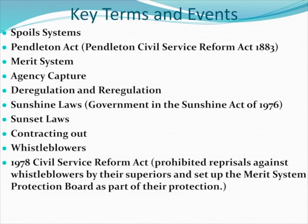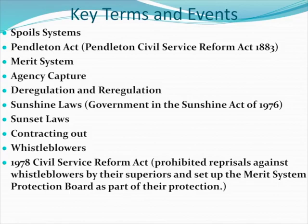Sunshine laws, passed after the Government in the Sunshine Act of 1976, require that federal agencies of a certain size maintain a public record of all meetings they hold. Sunset laws are laws that stipulate that an agency or program will disappear after a certain period of time. Sunset laws were passed as a result of Congress's general reluctance to eliminate agencies and programs after creating them, so that instead of existing in perpetuity, these would expire automatically unless Congress renewed them.